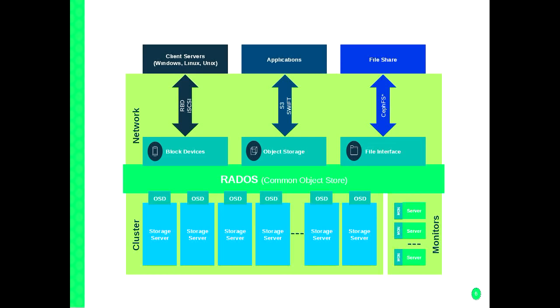A more logical view of a Ceph cluster is that you have some storage servers running the so-called object storage daemons that basically map a single drive into the RADOS object store. You typically have a bunch of storage servers with a bunch of disks each. Ceph really only starts making sense once you have more than four or five servers and about 10 drives each — below that you should probably be using something else. Then you have a bunch of monitors that keep track of what's up and what's down. On top of that you have the various access mechanisms: block devices, object storage with S3/Swift, and file interfaces like CephFS or NFS.